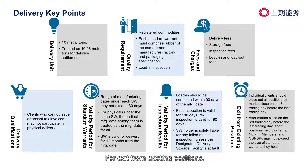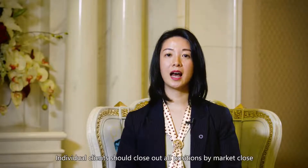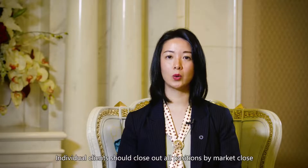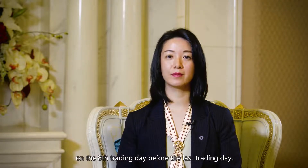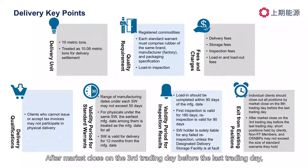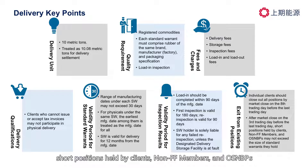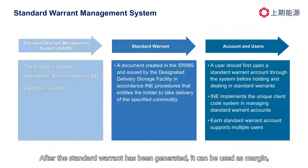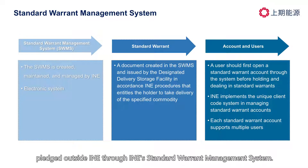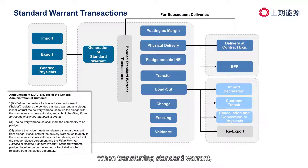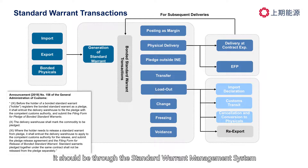For exit from existing positions, individual clients should close out all positions by market close on the 8th trading day before the last trading day. After market close on the 3rd trading day before the last trading day, short positions held by clients, non-FF members, and OSNBPs may not exceed the size of standard warrants they hold. After the standard warrant has been generated, it can be used as margin, used for physical delivery, or pledged outside INE through INE's standard warrant management system. Standard warrant transfers should be made through the standard warrant management system and cleared through brokerage agencies and INE.